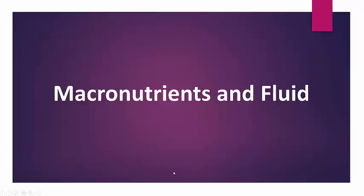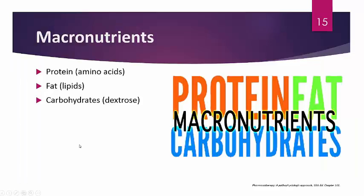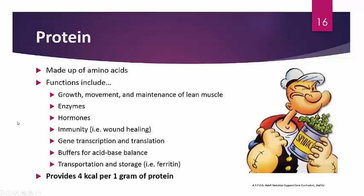Now that we've talked about nutritional assessment and determining calorie requirements, let's talk about macronutrient and fluid requirements. Macronutrients are protein, fat, and carbohydrates. Protein is made up of amino acids; fat is lipids; carbohydrates is dextrose. Important functions of protein include growth, movement, and maintenance of lean muscle mass — whenever you take in protein, the idea is to build muscle. Other functions of protein in the body include enzymes, hormones, immunity, and wound healing.